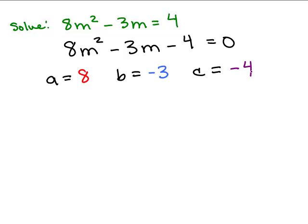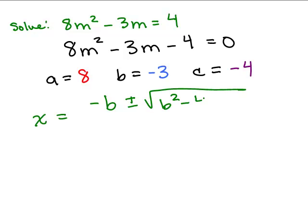We want to plug that in to the quadratic formula, which if you know the song you can sing it — or you can just write it. It's x equals negative b plus or minus the square root of b squared minus 4ac all over 2a. Now we're going to plug in the values for a, b, and c.